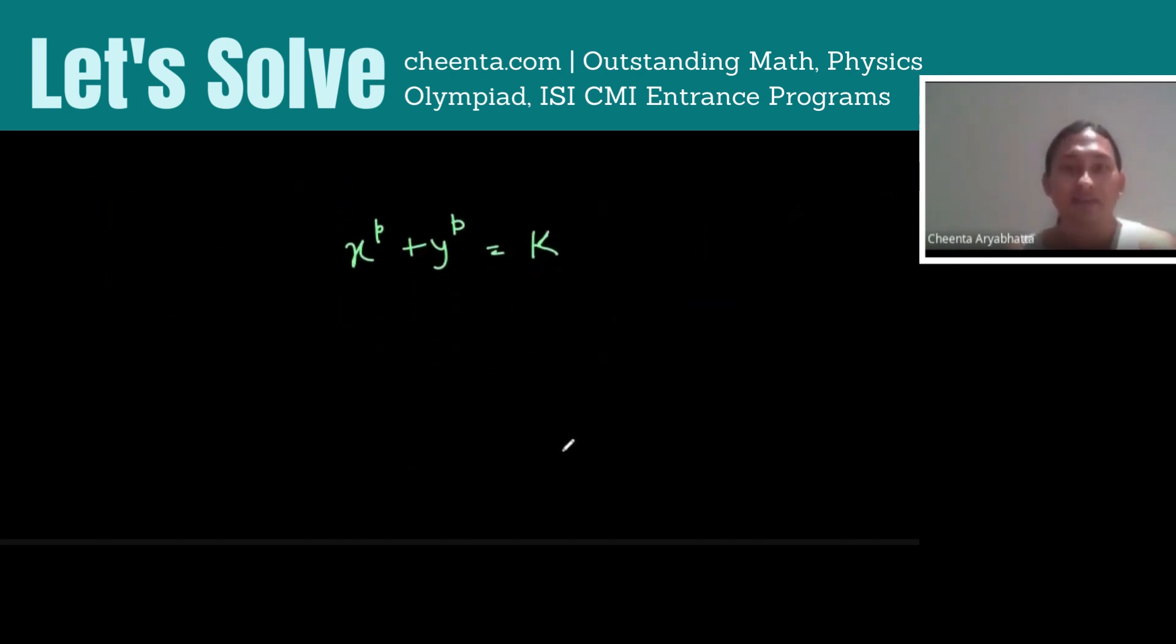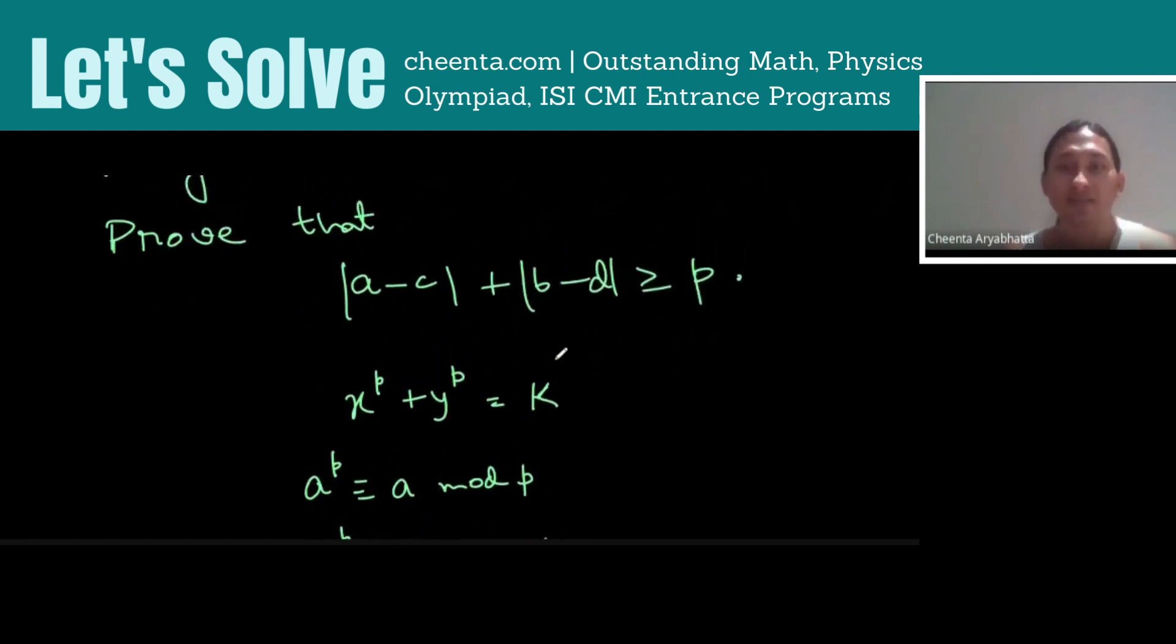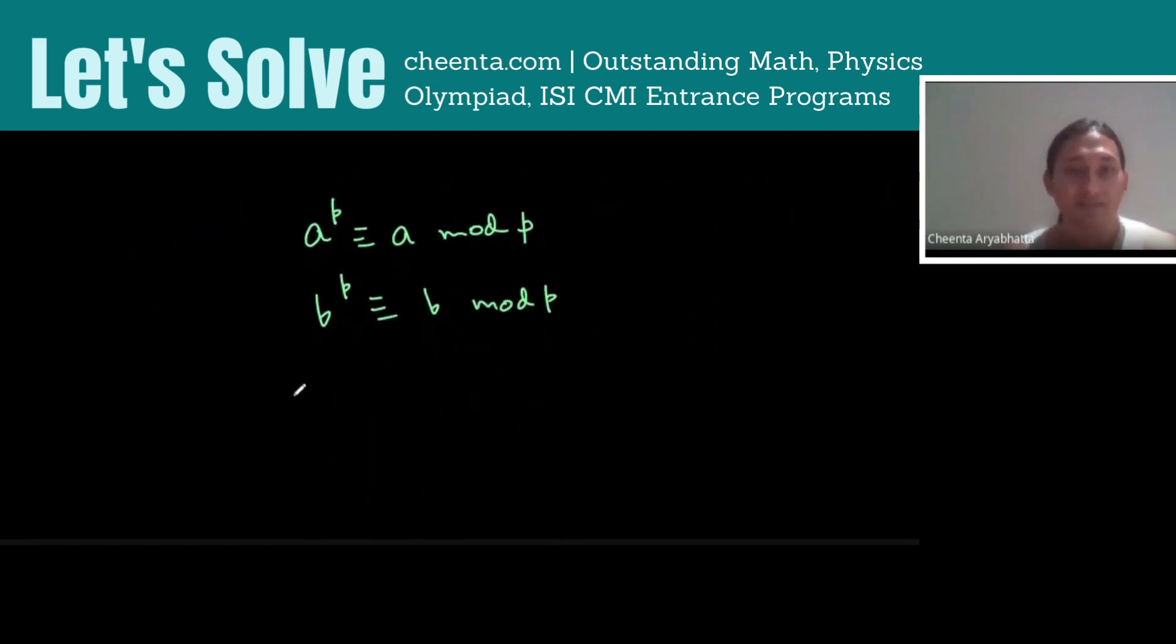Anyway, the way we do it is A^P is congruent to A mod P. This is from Fermat's theorem. B^P is congruent to B mod P. Again, Fermat's theorem. Now, we do this for all four numbers and that actually gives us A + B is congruent to C + D mod P.